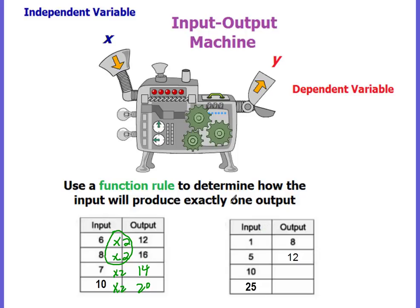Let's look at the table on the right. We have an input of 1 to get an 8 — again, we're increasing. Adding 7 to 1 gives 8, and adding 7 to 5 gives 12. So our rule is to add 7. Adding 7 to 10 gives us 17, and adding 7 to 25 gives us 32.